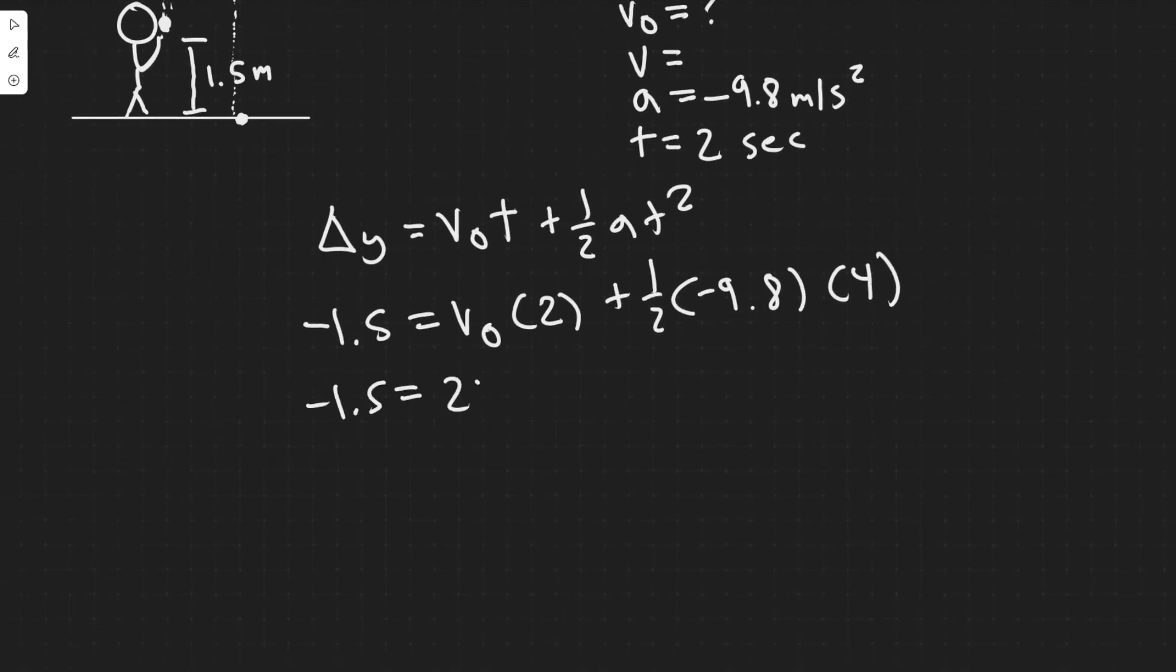So minus 1.5 equals 2 v sub 0, and then this is going to be minus, and then I'm going to see what that is equal to. So minus 9.8 divided by two times four. This is minus 19.6. So I'm going to add this to the other side, plus 19.6. So minus 1.5 plus 19.6, that's going to give you 18.1 is equal to 2 v sub 0.